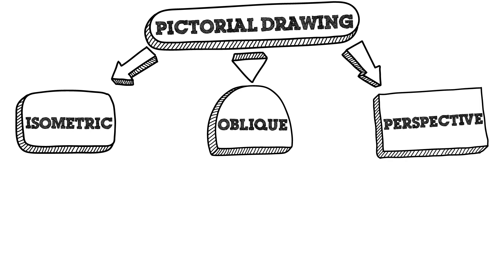Let's talk about pictorial drawings. There are three types, which are isometric, oblique, and perspective. Each type shows a 3D representation of an object, but accomplishes it in a different way.